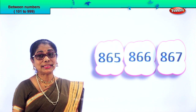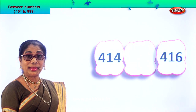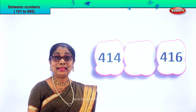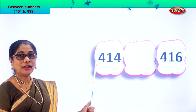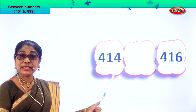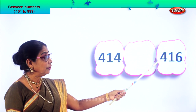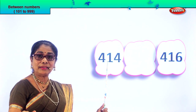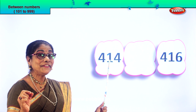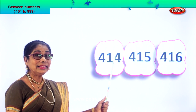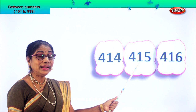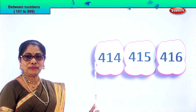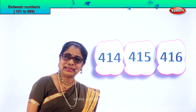Let's find — you find the middle number, the number between. Read: 414 and 416. After 4 comes 5, after 14 comes 15. So 414, the next will be 415, then 416. 414, 415, 416.